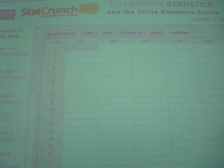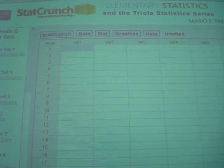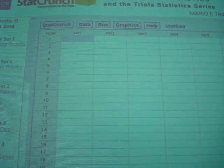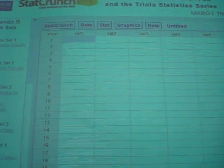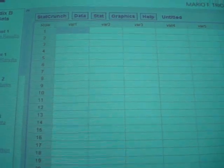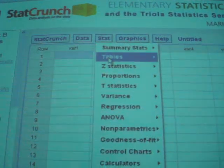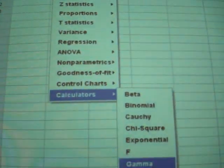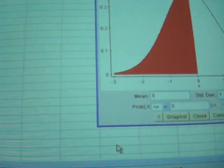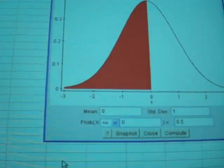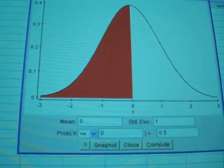Again, the way to get to StatCrunch is go ahead and just use the link from the Moodle home page. So we again want to use, this is a normal random variable. So we want to use stat, and go down to calculator, and then normal.